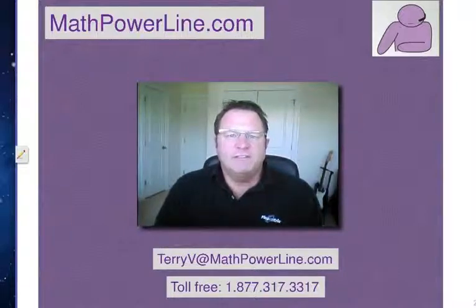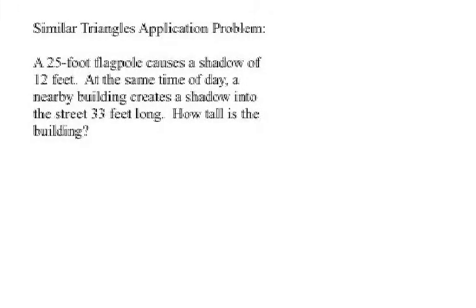Alright, let's go to today's lesson. Here is a typical similar triangles application problem. A 25-foot flagpole causes a shadow of 12 feet. At the same time of day, a nearby building creates a shadow into the street 33 feet long. How tall is the building?